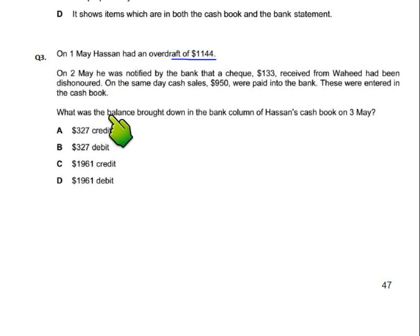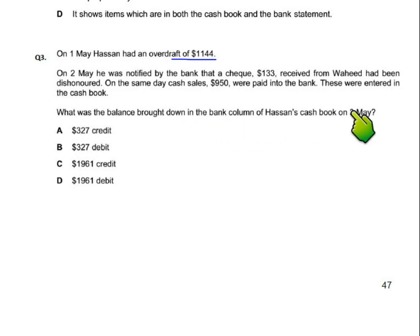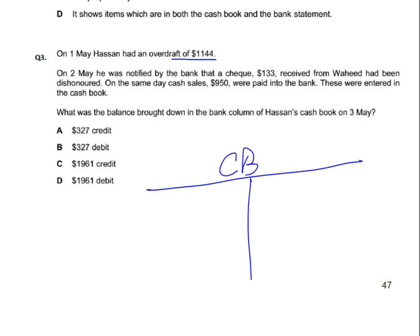What was the balance brought down in the bank column of the cash book on third May? Iske liye updated cash book banata hoon. Opening balance — first May mein overdraft tha, toh balance bd credit side jayega, kitna? 1144 — minus mein jara hai.